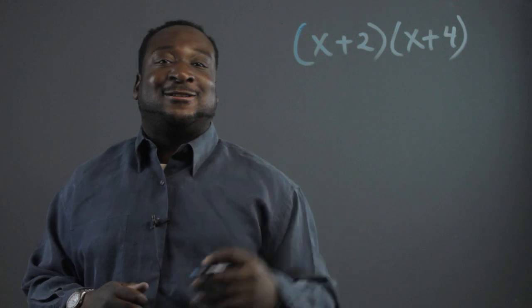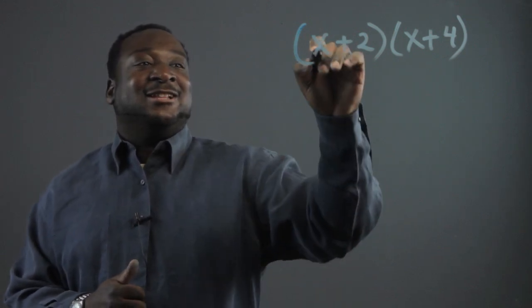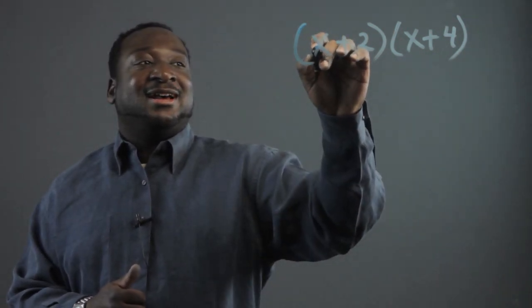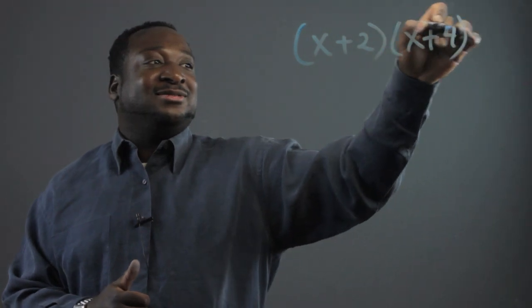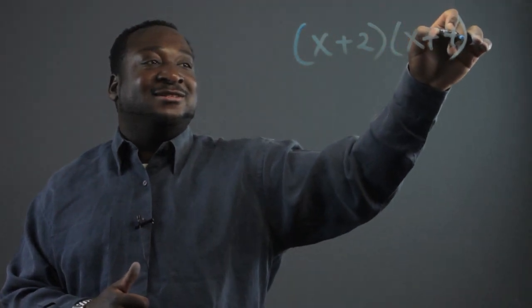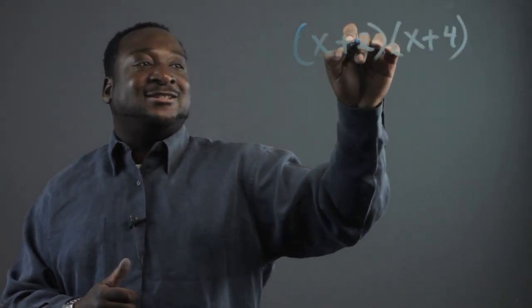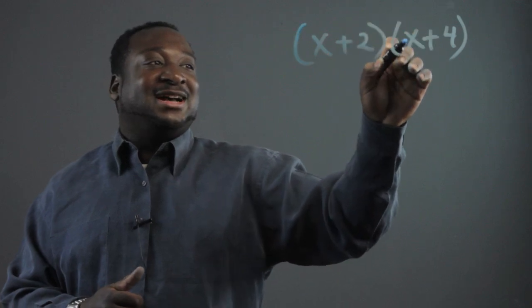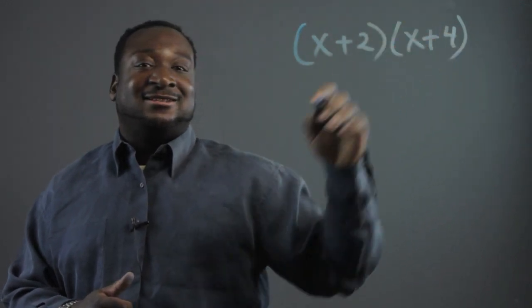Now to expand these, what you want to do is you want to take the first term times both the numbers in the second binomial, and then the second term and multiply it by the numbers in the second binomial.